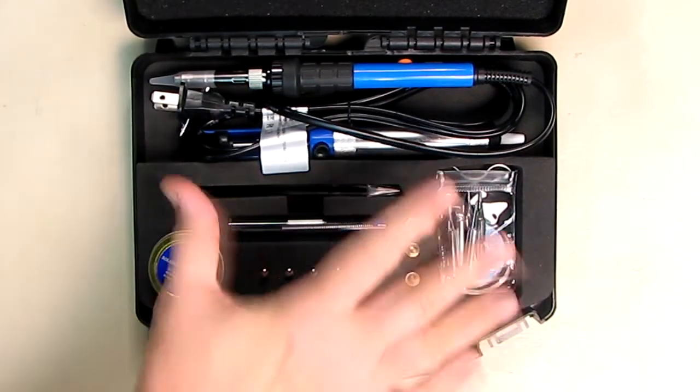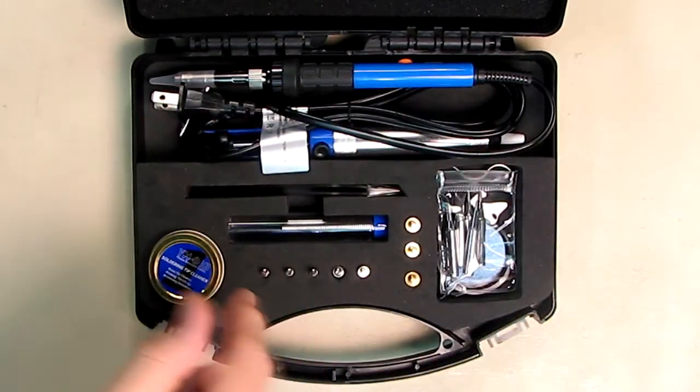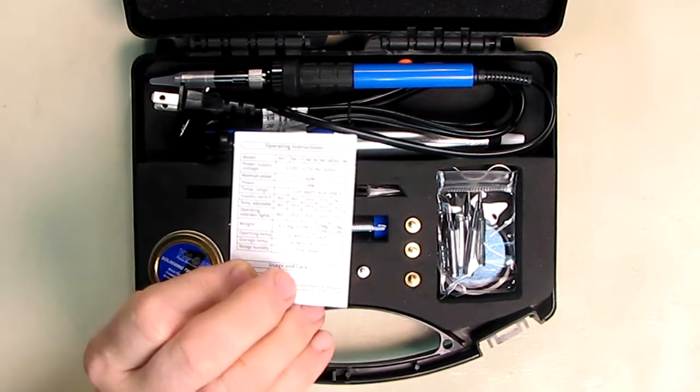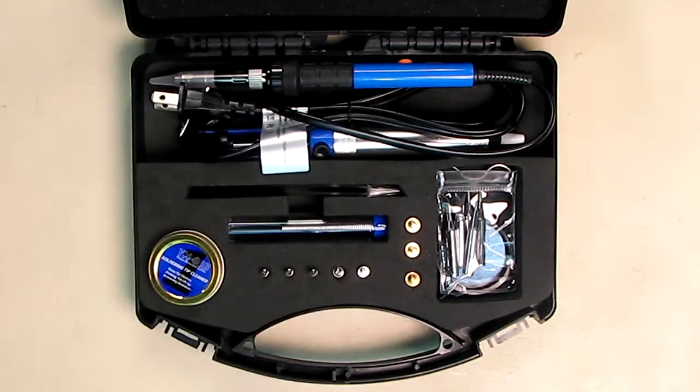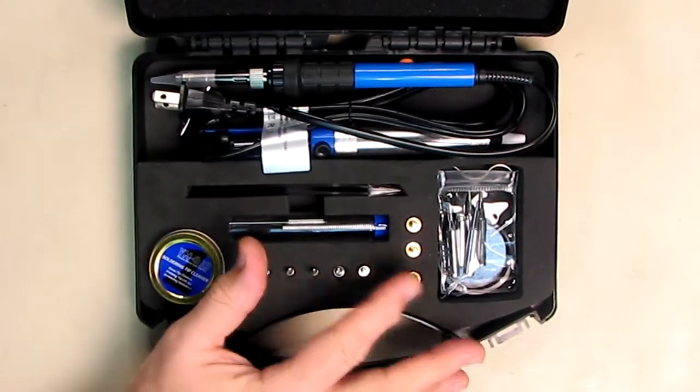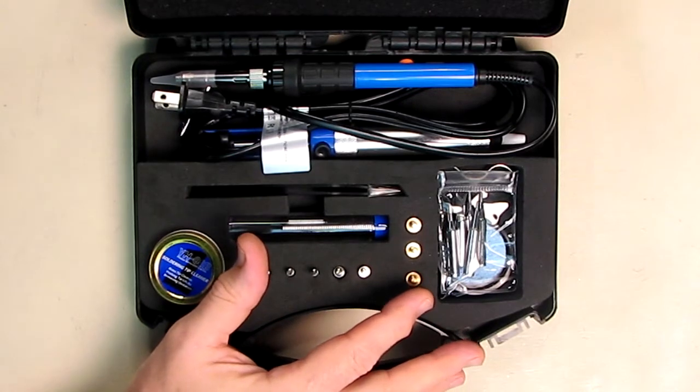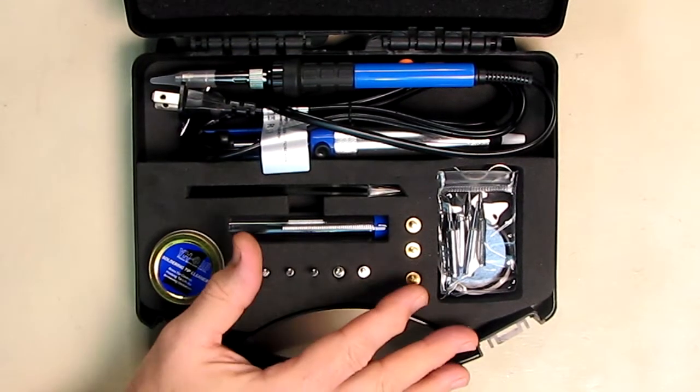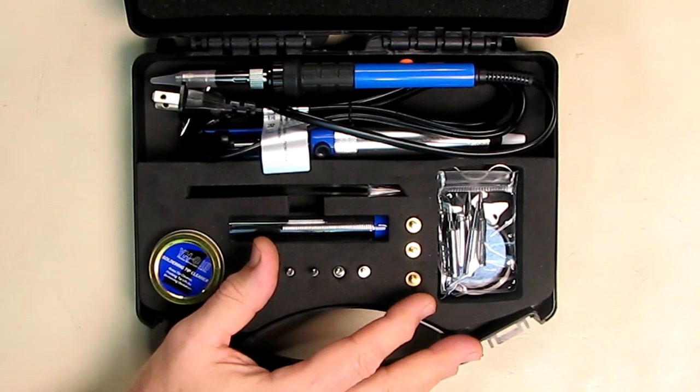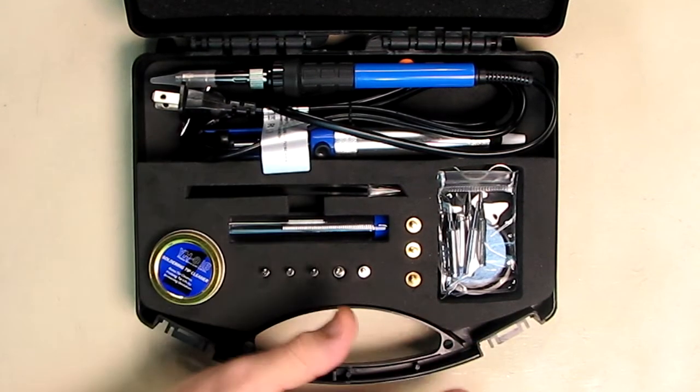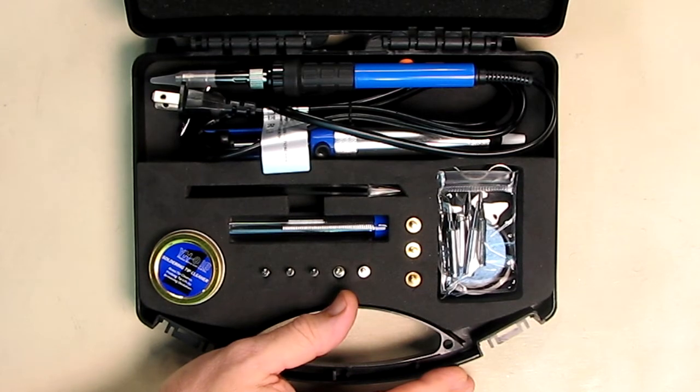Over here has a little instruction sheet with the specs about this product, so we're going to go over everything that's in here. This is a 60 watt unit, 110 to 115 volts, and it's a kit with adjustable tip temperature from 420 degrees Fahrenheit to about 896, or 220 to 480 degrees Celsius.